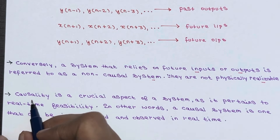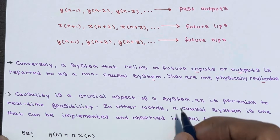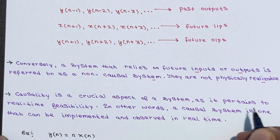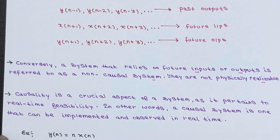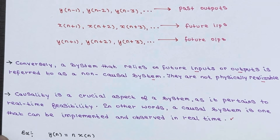Causality is a crucial aspect of a system as it pertains to real-time feasibility. In other words, a causal system is one that can be implemented and observed in real-time — that is what is meant by being physically realizable.